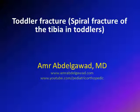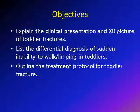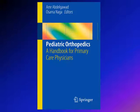Hi, this is Amr Abdugawad and this lecture will be about toddler fracture, which is the spiral fractures of the tibia in toddlers. The objectives of this lecture are to explain the clinical presentation and the X-ray pictures for kids presenting with toddler fracture, to list the differential diagnosis for sudden inability to walk or limp in toddlers, and to outline the treatment protocol for toddler fracture. A good source you can use is the book Pediatric Orthopedics, Handbook for Primary Care Physicians by myself and Dr. Naga.